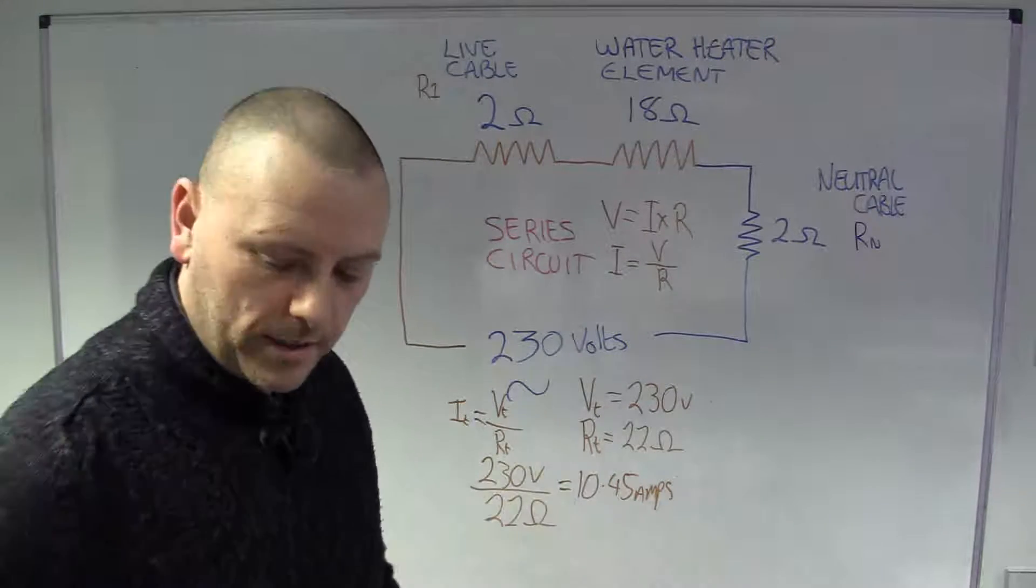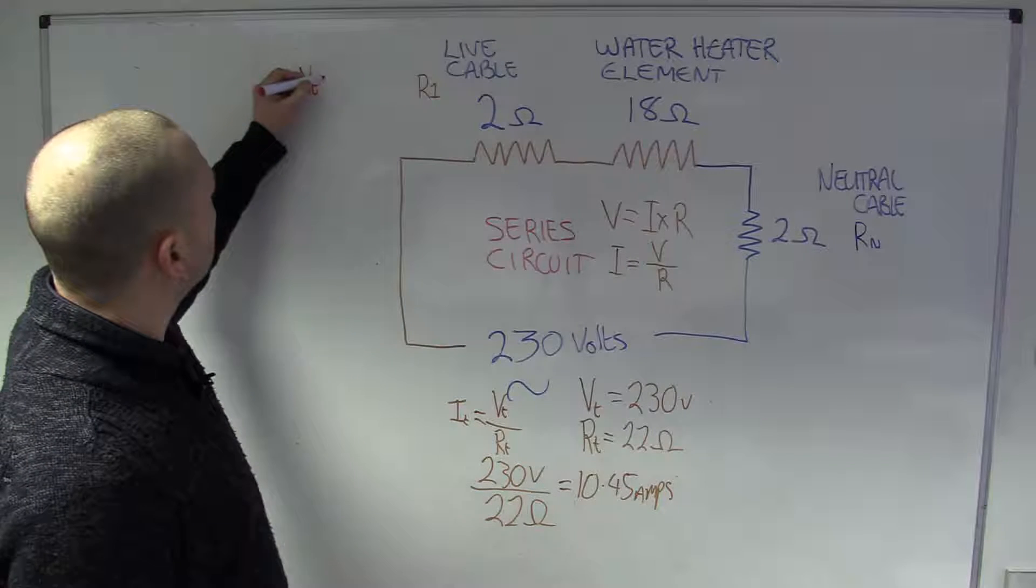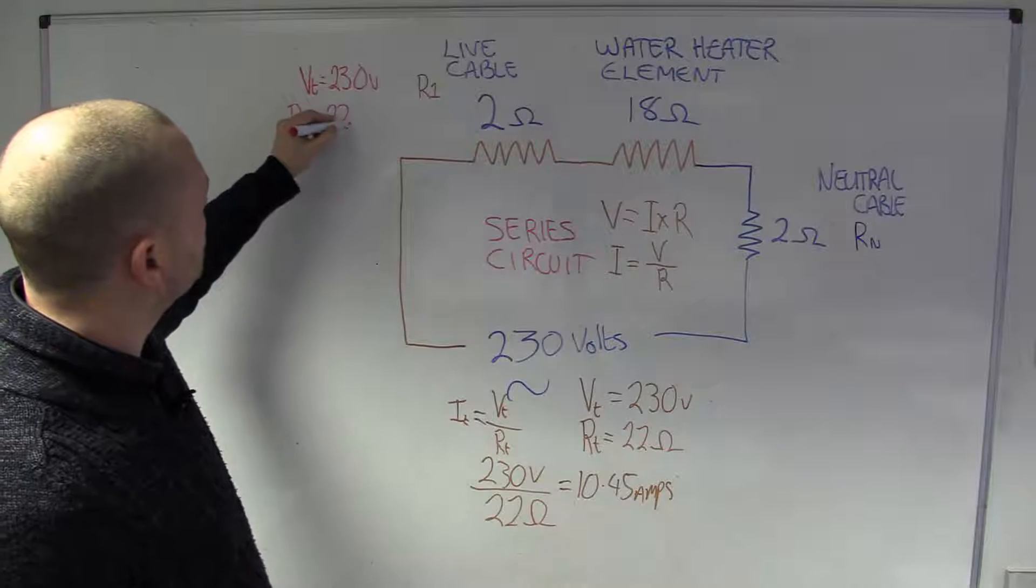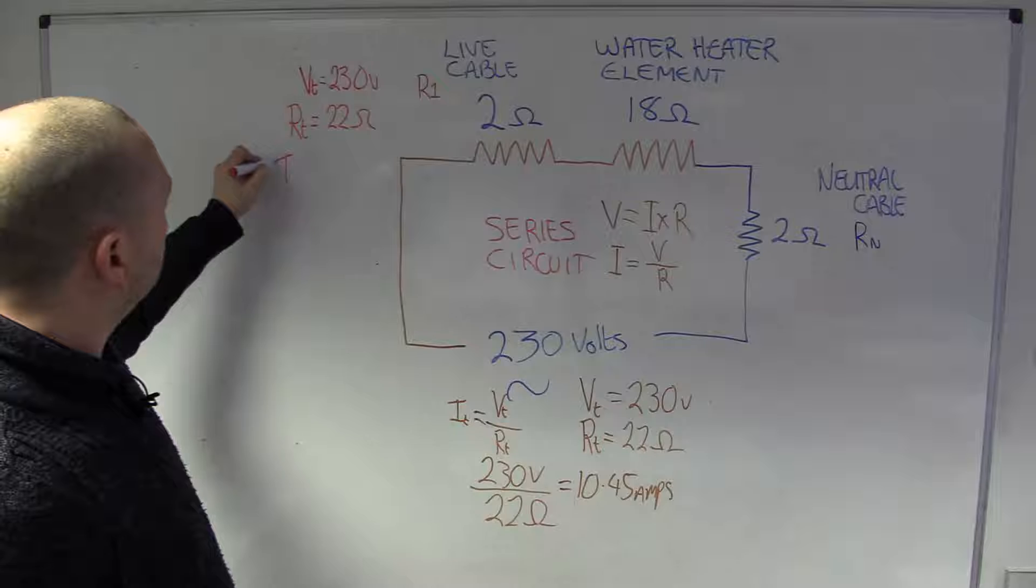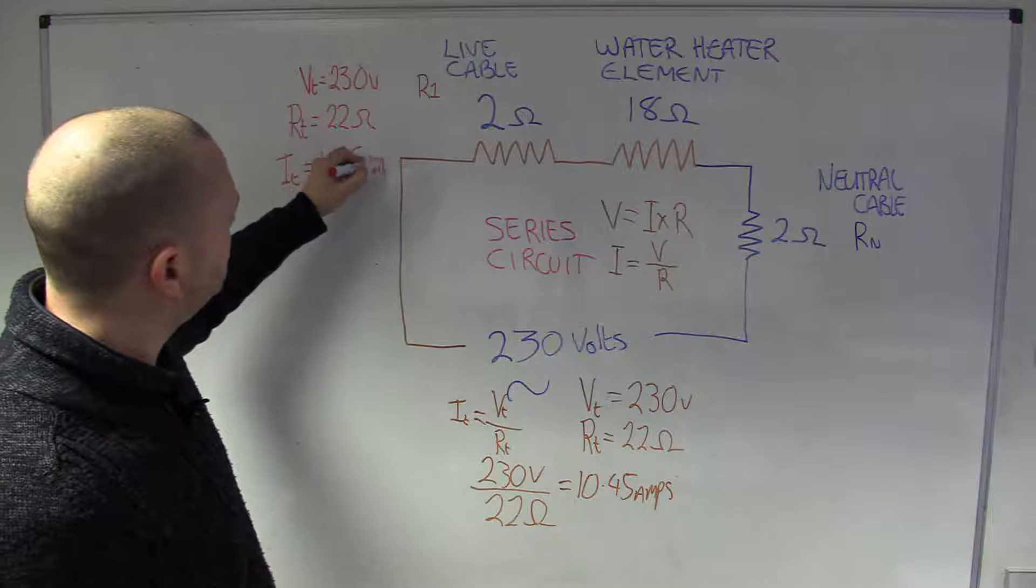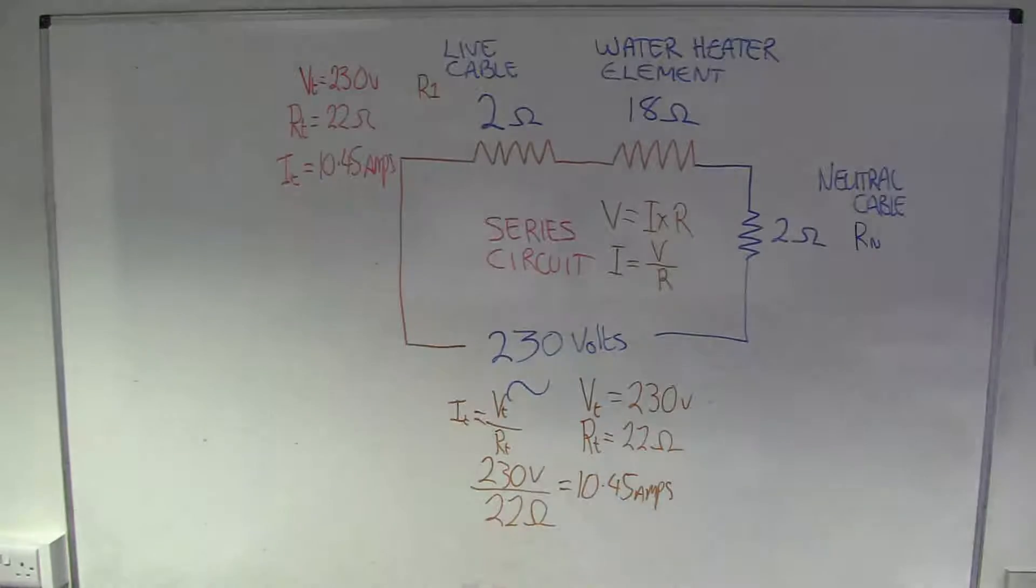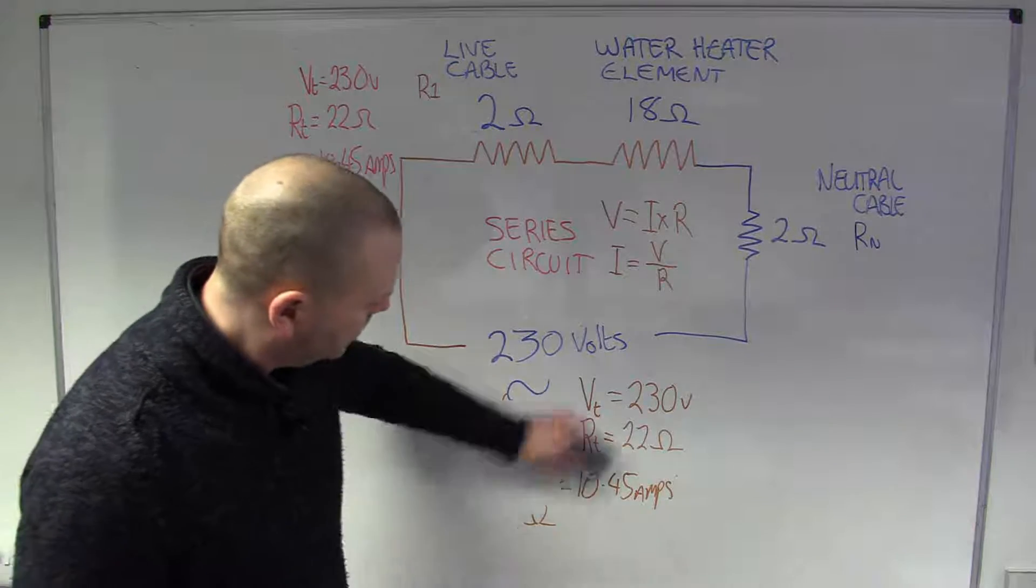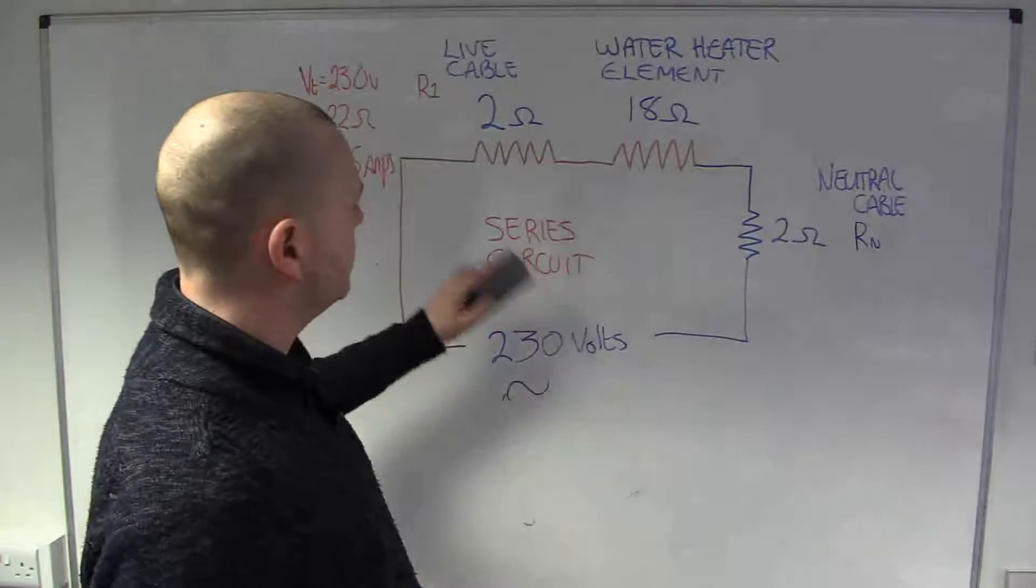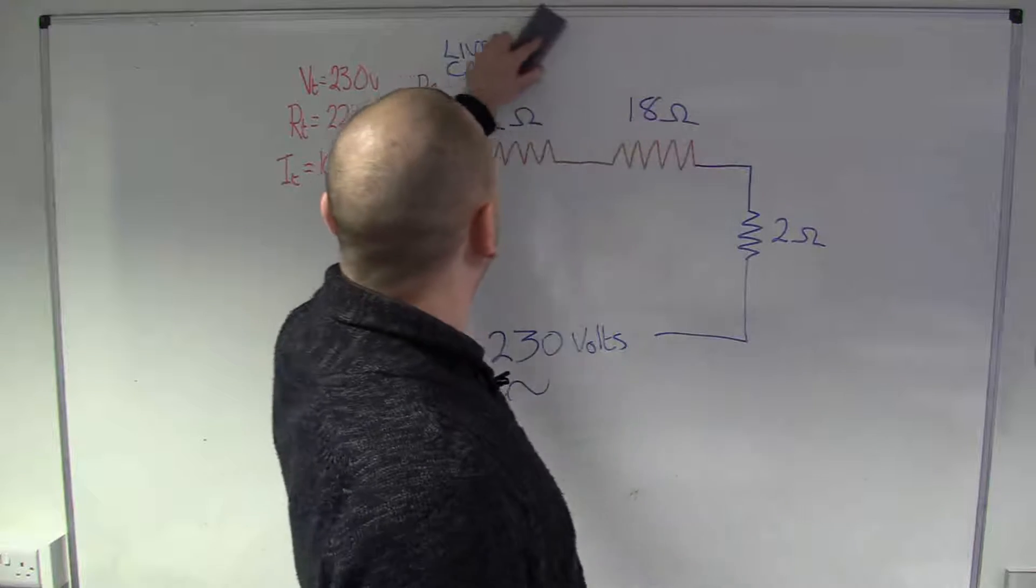So, 10.45 amps. Excellent. So, let's just write down them parameters, somewhere a little bit out of the way. So, our V total, 230 volts, our R total was 22 ohms, and our current total, was 10.45 amps. Okay, so far so good. Let's tidy that up. Get rid of all the unnecessary. It's a series circuit, remember that.